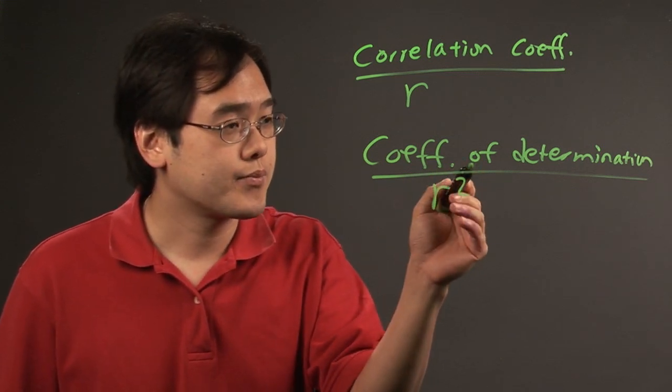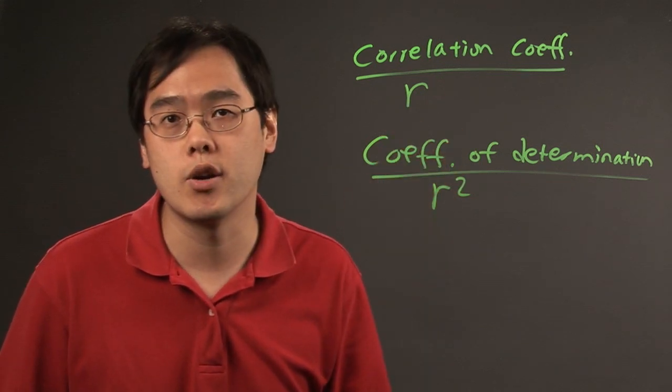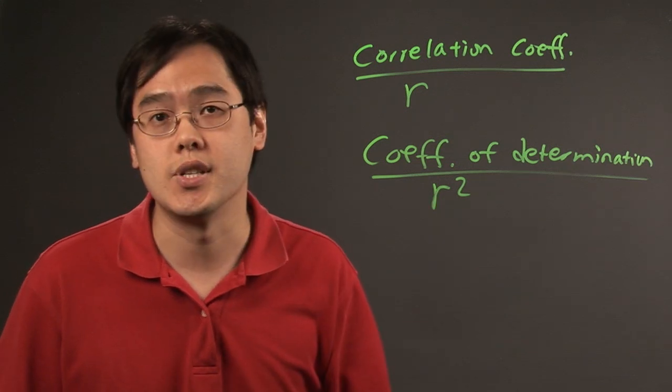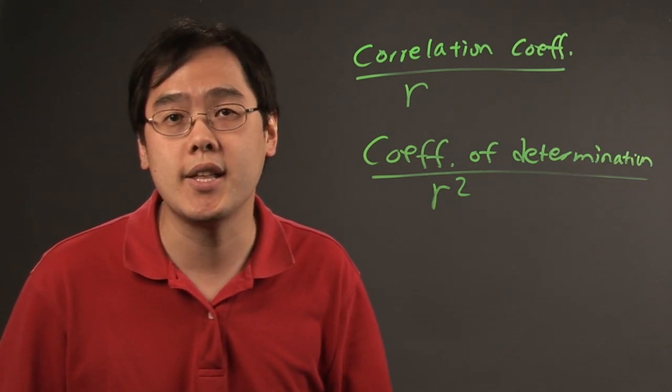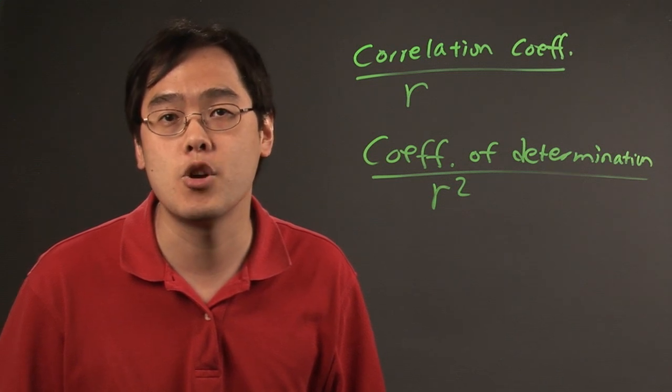In a sense the coefficient of determination piggybacks off the correlation coefficient's data and then helps you make additional inferences from there. I'm Jimmy Chang and that addresses the question what is the difference between the correlation coefficient and the coefficient of determination.